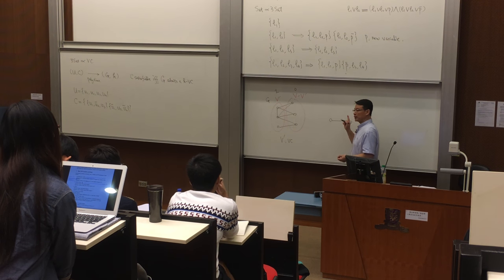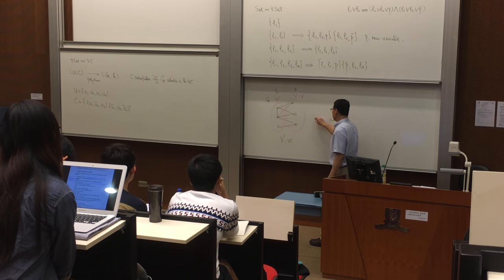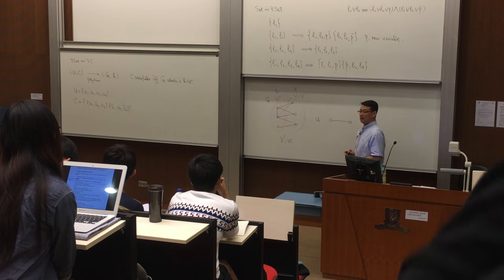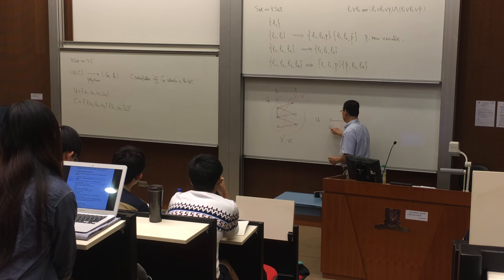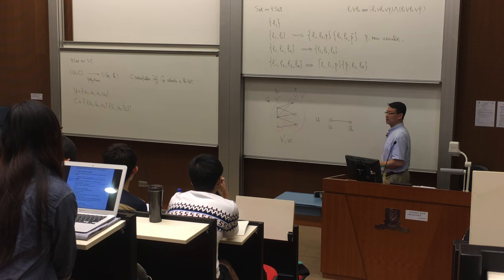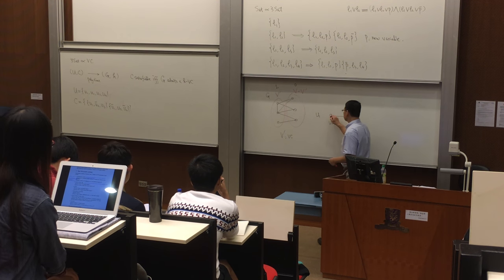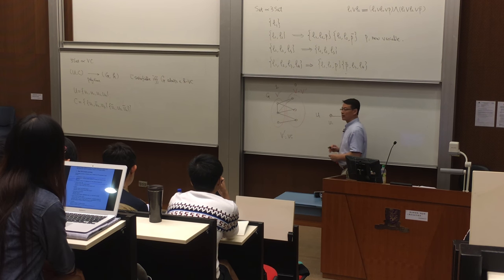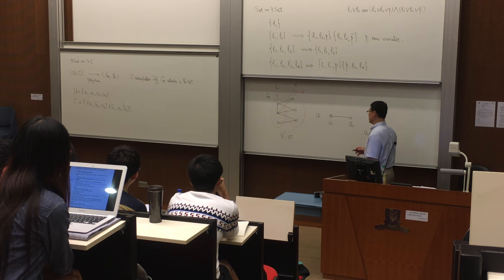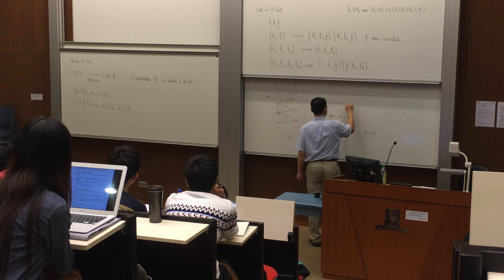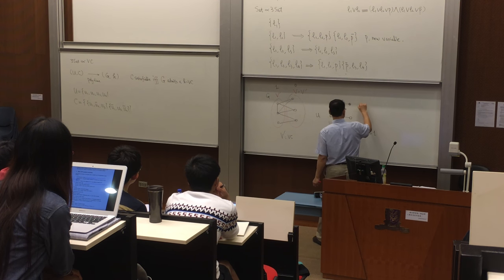If this vertex corresponds to Boolean variable U1, then this endpoint is U1 and this endpoint is U1-bar. If I take this vertex, that means U1 gets value 1. If I have the other situation, that corresponds to U1 equals 0.